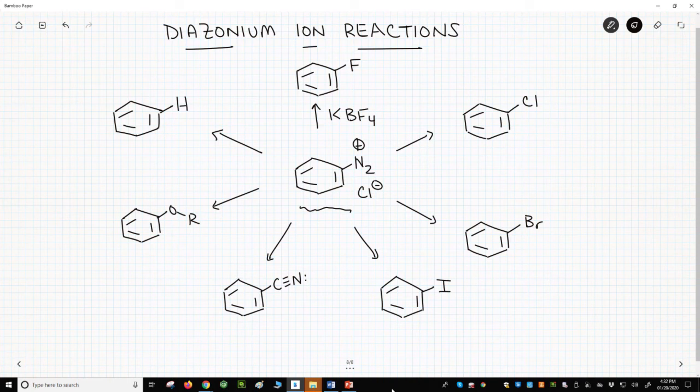As we go around the circle of reactions clockwise, we see different ways to put other halogens onto the ring: chlorine with copper chloride, bromine with copper bromide, and iodine with potassium iodide.